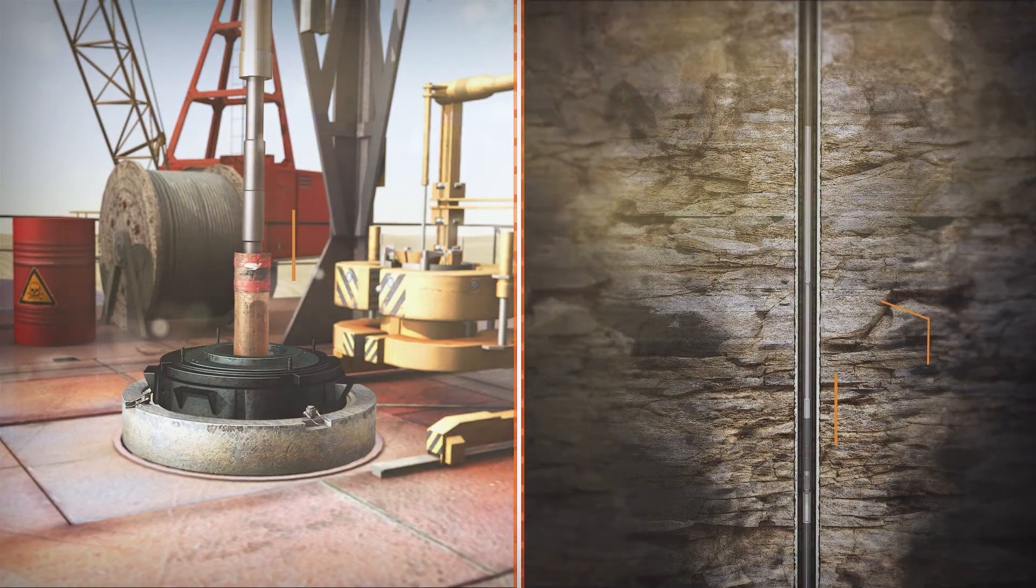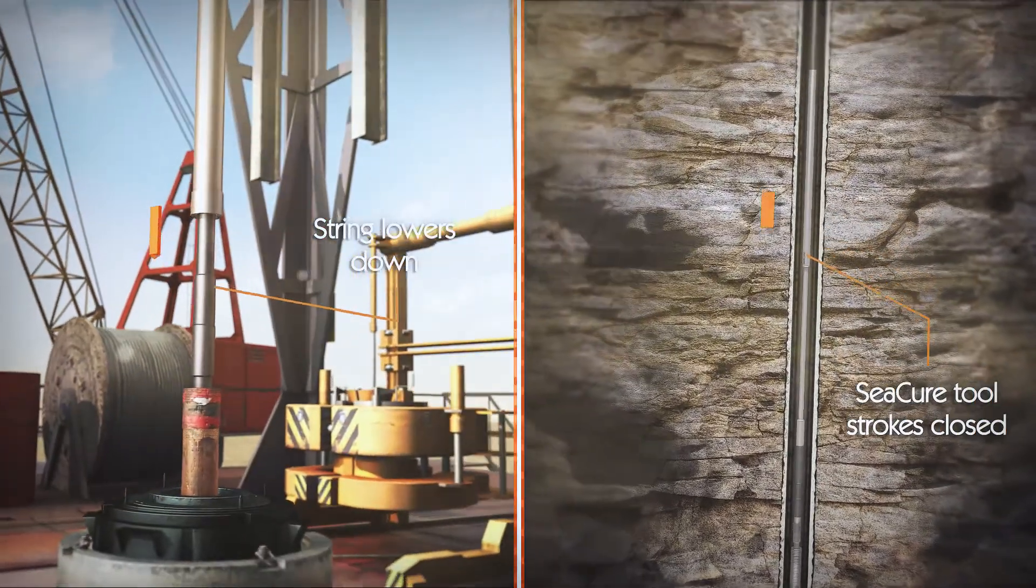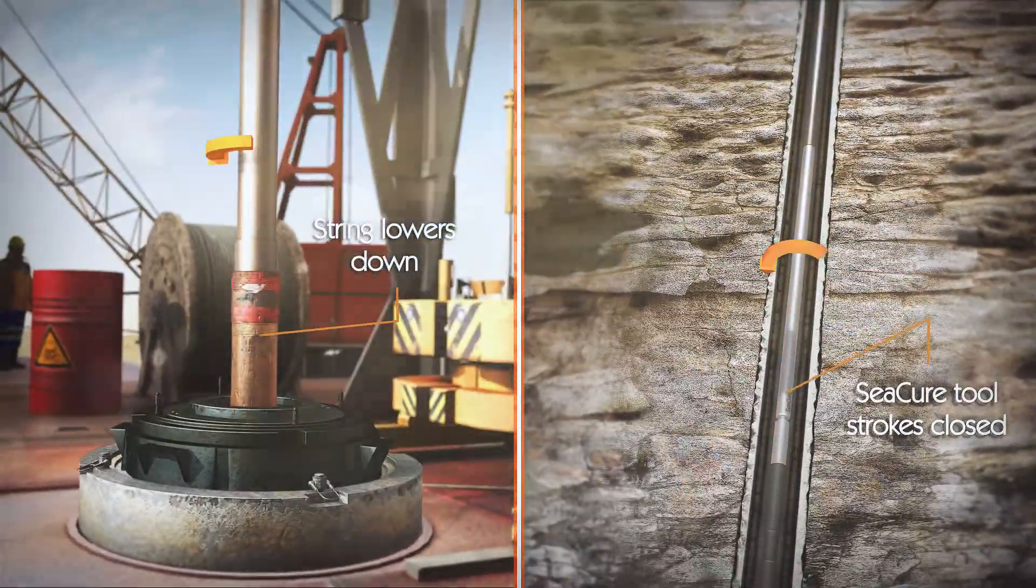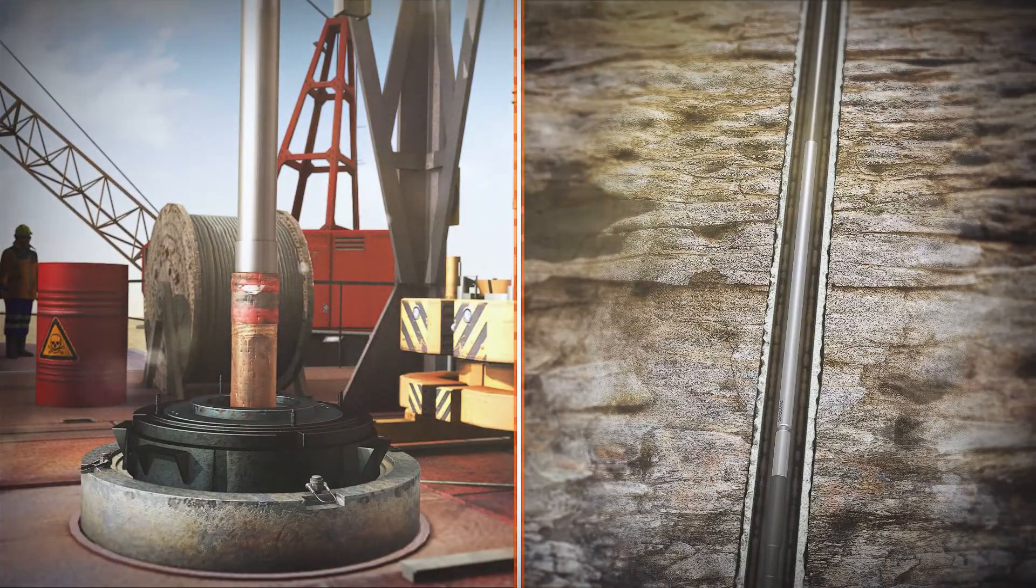With the liner hanger assembly made up to the string, the C-Cure slip joint tool strokes partially closed into the swivel position, enabling for safe make-up and rotation of the liner.